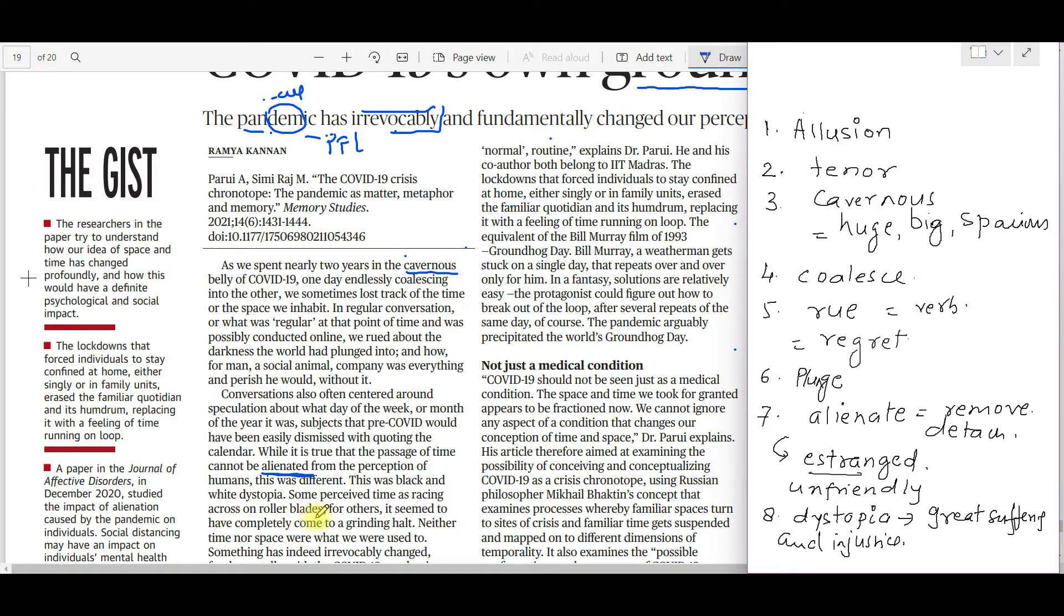Some perceive time as racing across on rollerblades. For others, it seems to have completely come to a grinding halt. Depending on what faction of society you belong to - health workers and people involved in well-being of others, doing volunteer work, for them time never stopped. It was racing on rollerblades. For other people stuck in lockdowns at their homes, doing nothing, going nowhere, with no societal contact, time came to a grinding halt. Never has the passage of time been so different or alienated from human perception, but this experience was very subjective.